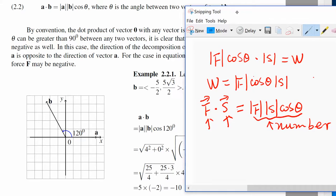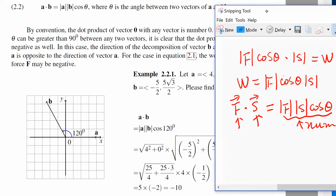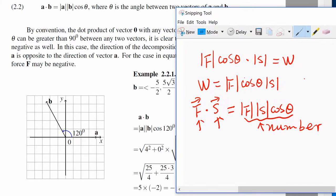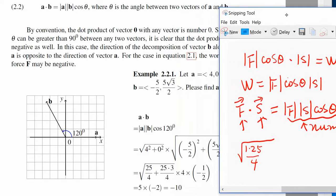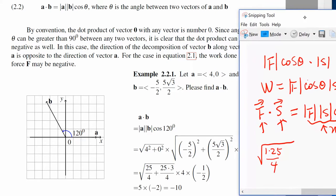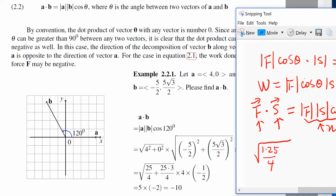And 2 squared which is 4. So let's see what we get. We know that 1 times 25 over 4, that's 25 over 4.